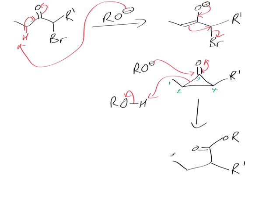That will then give you a product. I'll label them up again because it is a bit tricky: one, two, three, four. And that is one, two, three, four. So as you can see, taking it back to the beginning — one, two, three, four — it's actually connected two to four. It's a lovely way of making a carboxylic acid or an ester from a ketone, and it's also a good way of moving two carbons closer together. So that is the Favorskii reaction.